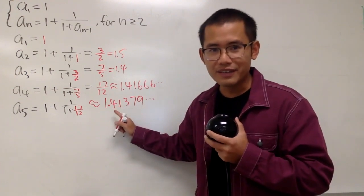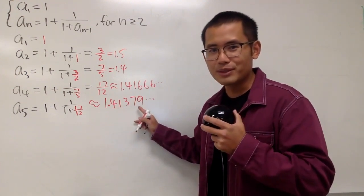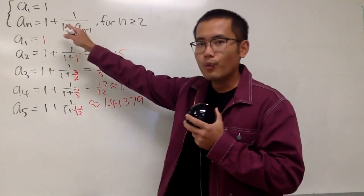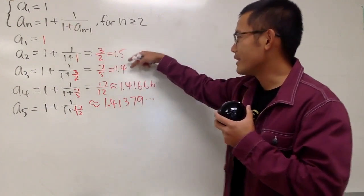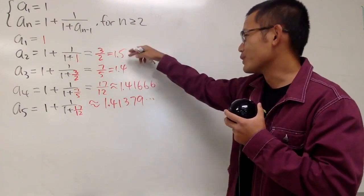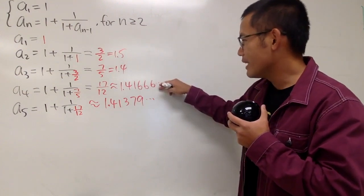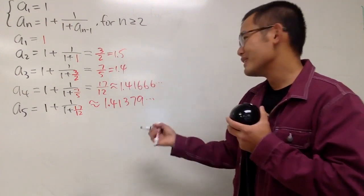So let me just check. Yes, I have the answers on the screen, because I can memorize all these digits. Okay, so you see, 1, and then goes up, and then went down, and then goes down, and then goes up, and then goes down. Huh? Interesting.